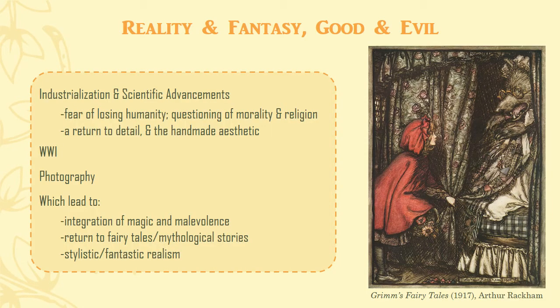In most Golden Age art, contrast is used in tone, color, and rendering. Industrialization and scientific advancements caused the fear of losing one's humanity or individuality, as well as a questioning of morality and religion. Mass production sparked a return to the handmade aesthetic, and these fears caused a return to moral art in the comforts of old traditions, like detailed semi-realistic rendering.